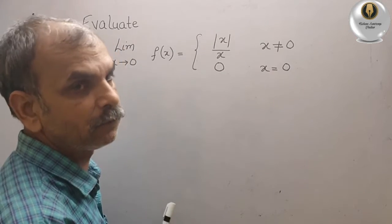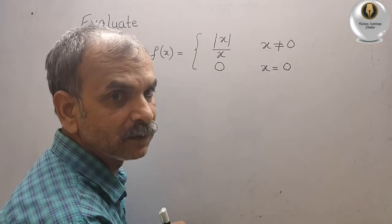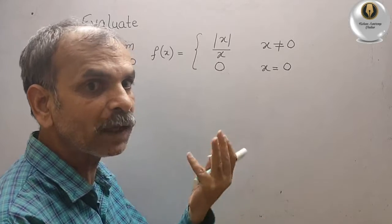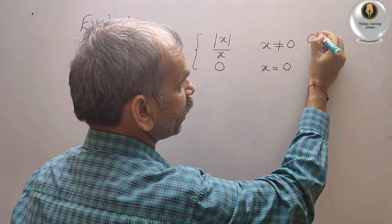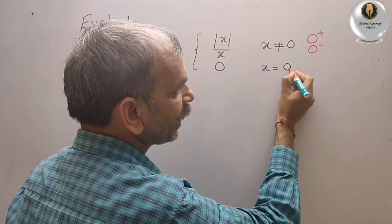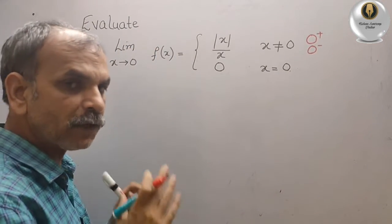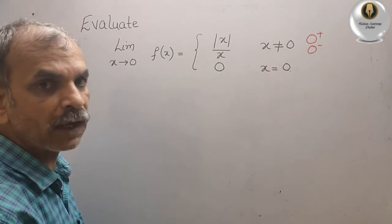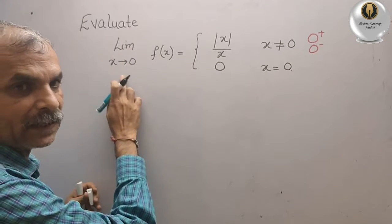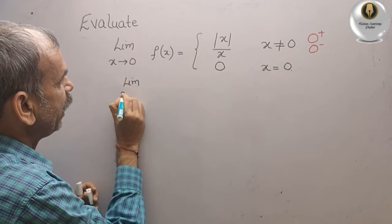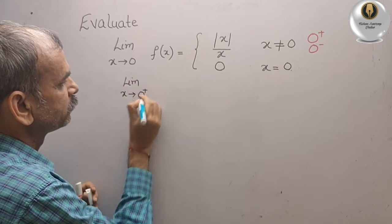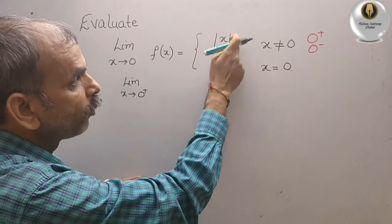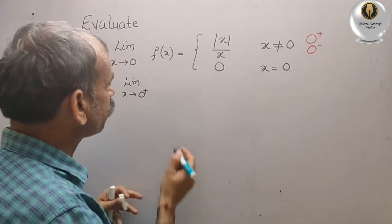We know that as x tends to 0, it contains two values: 0 plus and 0 minus. So first we will take the limit as x tends to 0 plus. For 0 plus, we have to evaluate modulus of x by x.